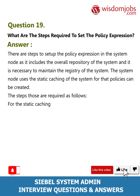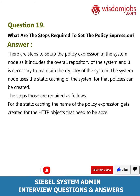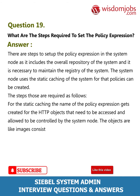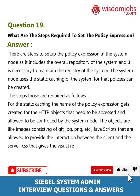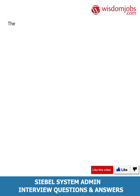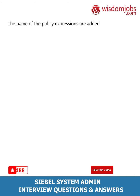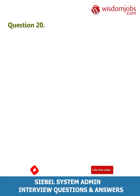Question 19: What are the steps required to set the policy expression? Answer: The steps to set up the policy expression in the system node maintain the overall repository and registry of the system. The system node uses static caching, and policies can be created. For static caching, the name of the policy expression gets created for HTTP objects — such as images (GIF, JPG, PNG), JavaScripts, and CSS — that provide visual representation. Policy expression names are added to show increased compression like JS and JS_content_type.